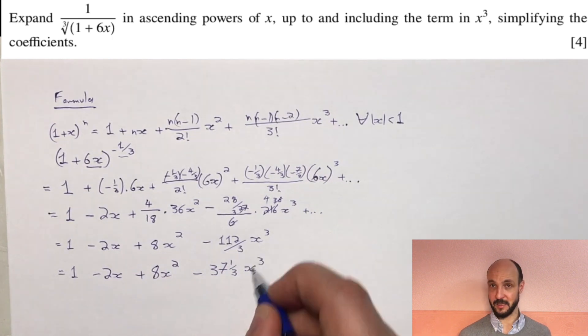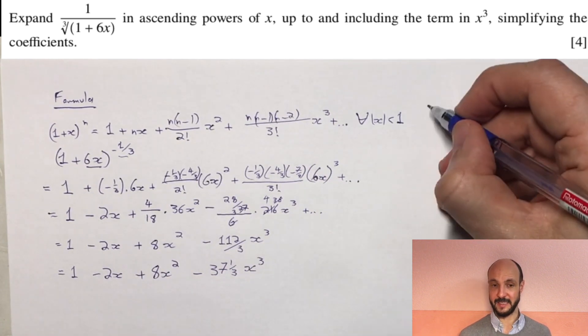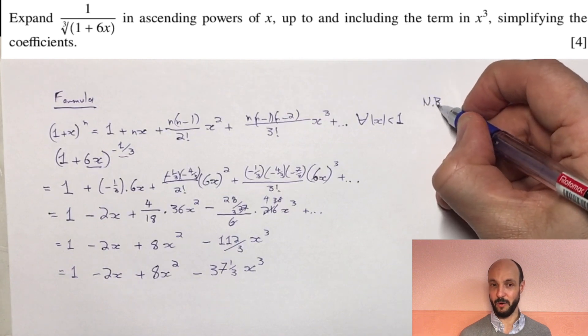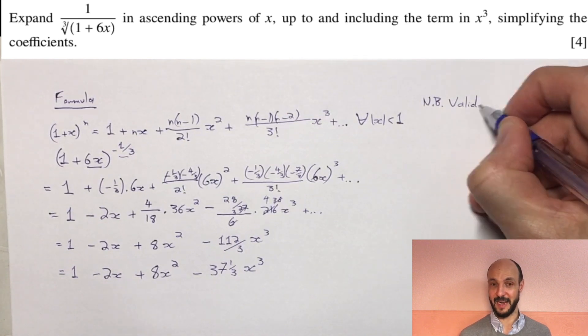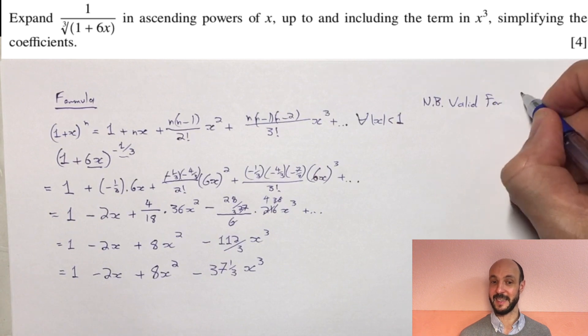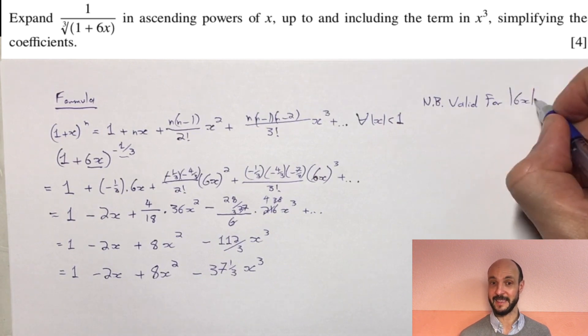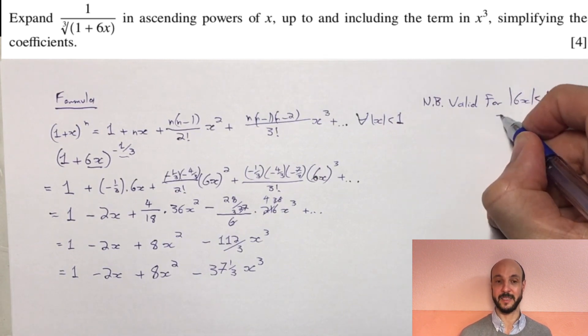The question hasn't asked us to show it, but we often do get asked in these questions to show what values it's valid for. If we were asked that, it's valid for mod of 6x is less than 1, or mod of x is less than 1 over 6. But we weren't asked that in this one.